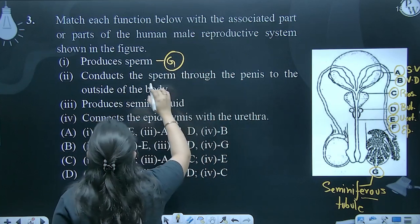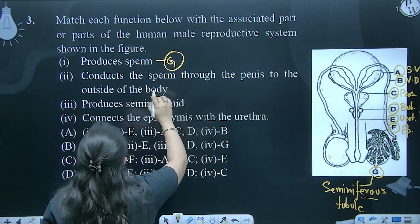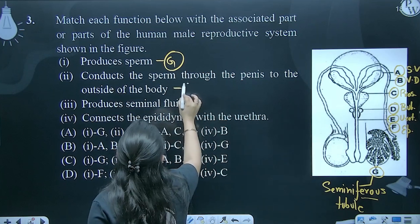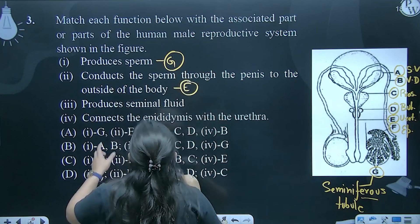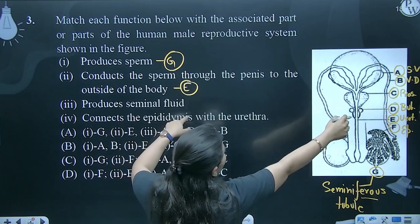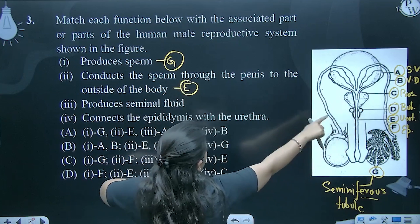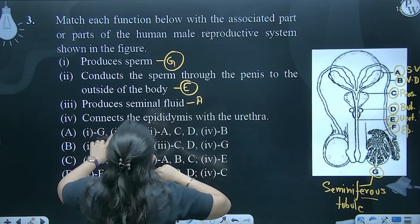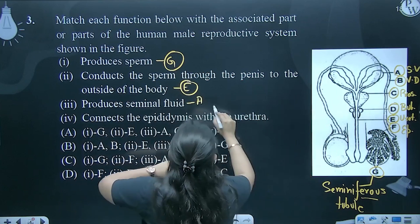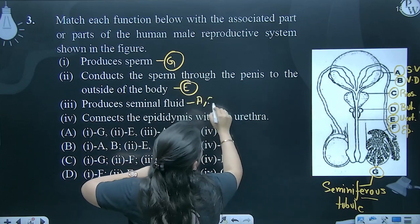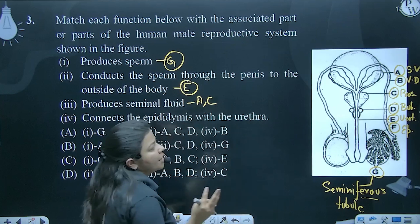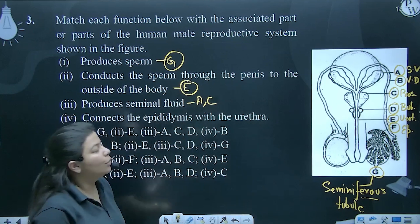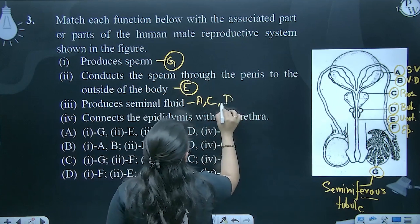Conduct the sperm through the penis to the outside of the body — kaun karega outside of the body? Urethra le ja raha hai, to it is E. Uske baad produces seminal fluid — seminal fluid seminal vesicle produce karegi, to A. C bhi hoga iska — C seminal fluid mein teeno glands ke secretion honge: prostate, seminal vesicle, and bulbo-urethral. So A, C and B.